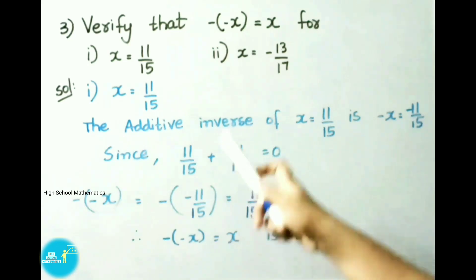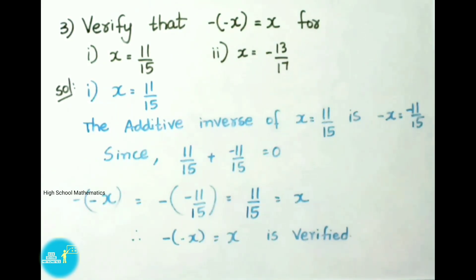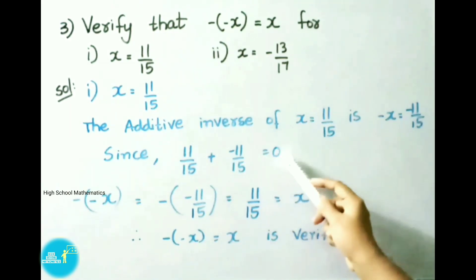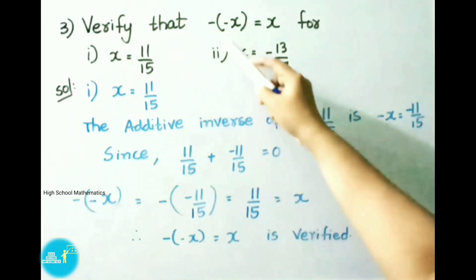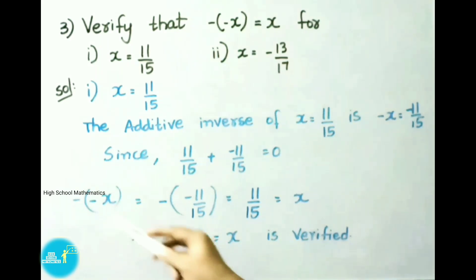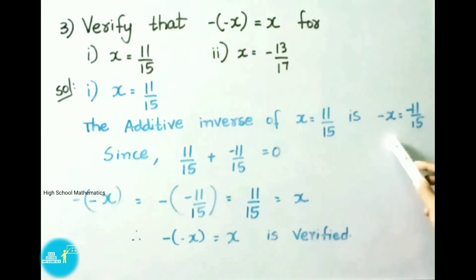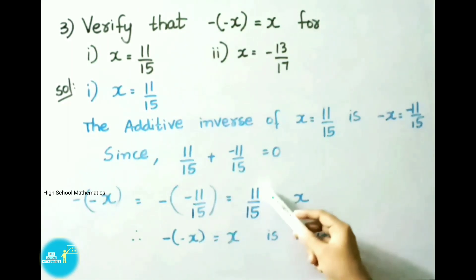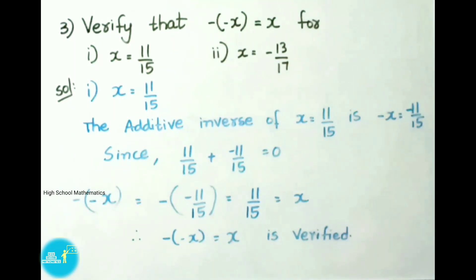See now, question number 3: verify that minus of minus x equal to x. For x equal to 11 by 15, and x equal to minus 13 by 17. Let us see the solution. First one, x equal to 11 by 15. The additive inverse of x equal to 11 by 15 is minus x equal to minus 11 by 15. Additive inverse of x is minus x, and additive inverse of 11 by 15 is minus 11 by 15. Since 11 by 15 plus of minus 11 by 15 is equal to 0. They ask us to verify minus of minus x is equal to x. So we have written minus of minus x. That equals to minus of minus x value is minus 11 by 15. That equals to minus of minus means plus, so we have written plus 11 by 15, which is equal to x. Therefore, minus of minus x is equal to x. Hence, it is verified.